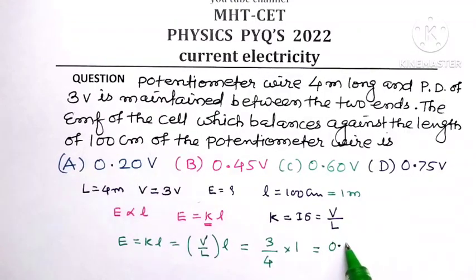3 by 4 means 0.75, and the unit is volts. So out of 4 options here, option D, which is 0.75 volt, is the correct option.